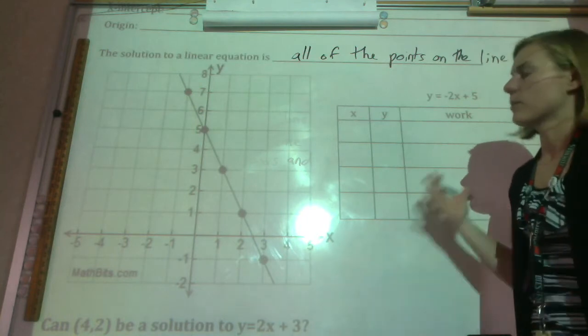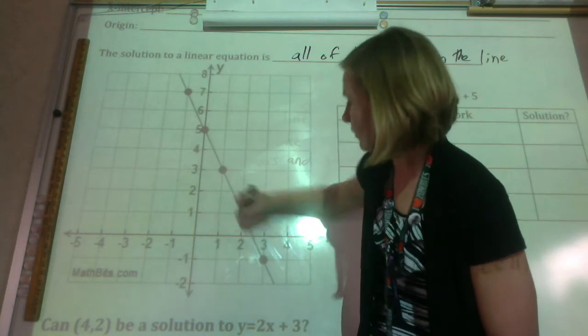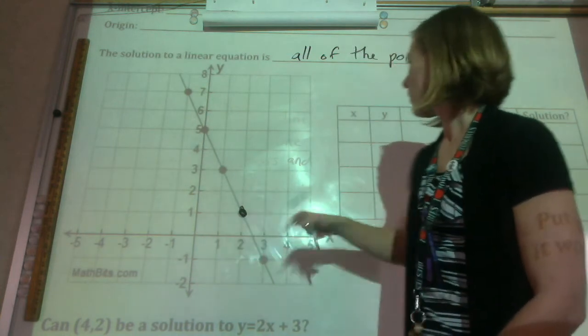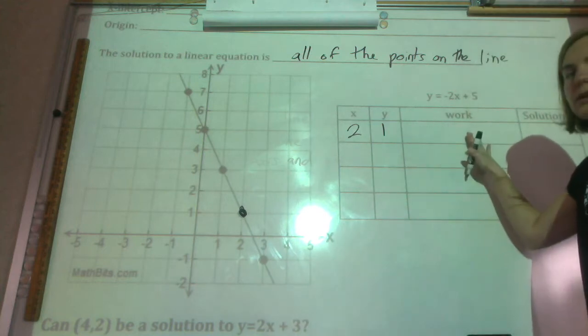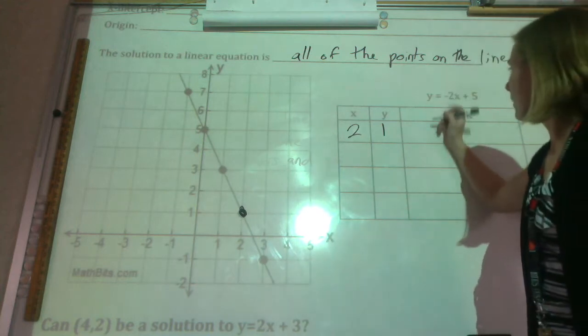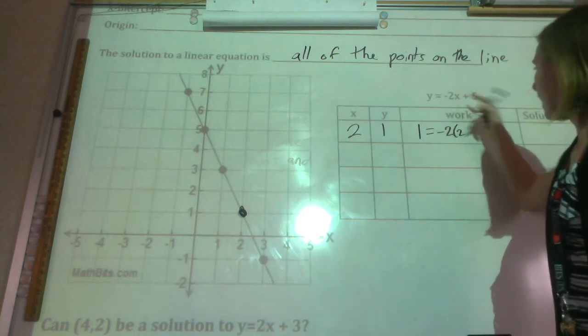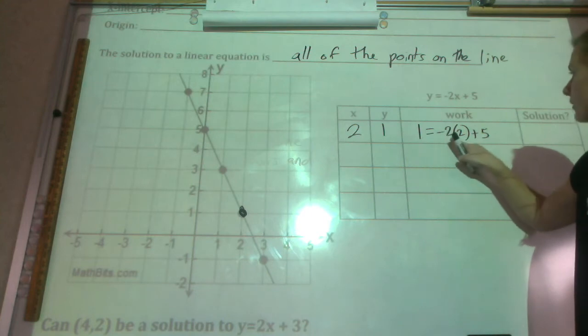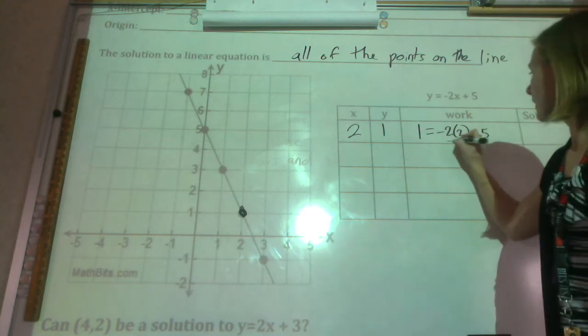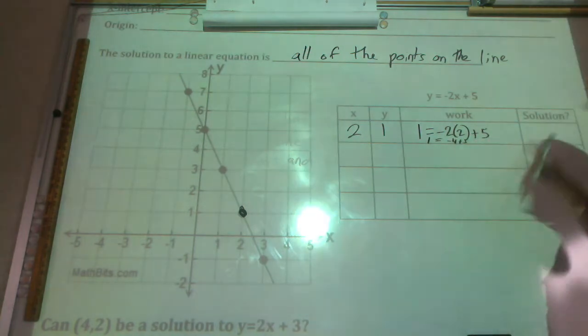So let's pick a random point. Maybe I like this one right here. So this is at (2,1). So x is 2, y is 1. So let's see if it works out. So let's put it in for the equation. So 1 goes in for y, 2 goes in for x, and let's just see if it works. So negative 2 times 2 is negative 4 plus 5. Yeah, that does equal 1. So is it a solution? Yes, it is.